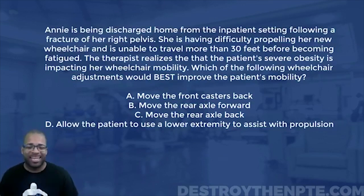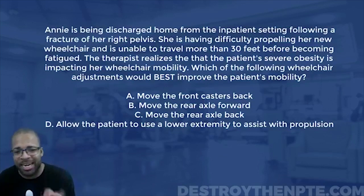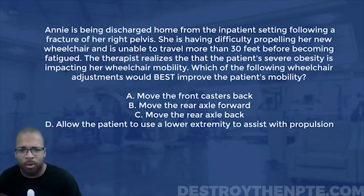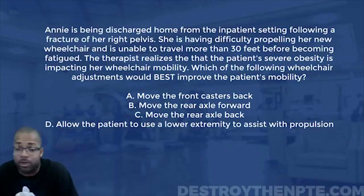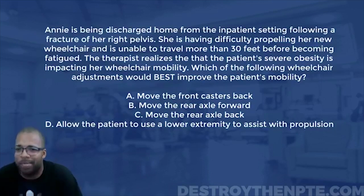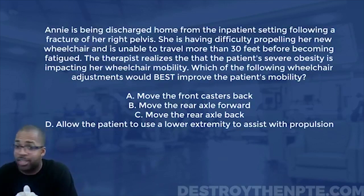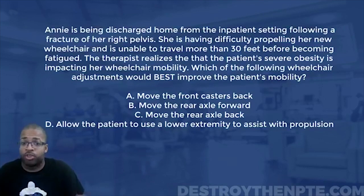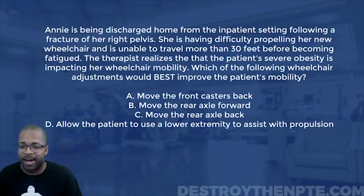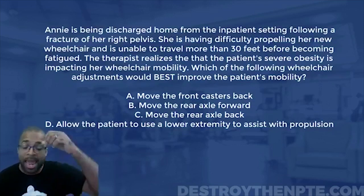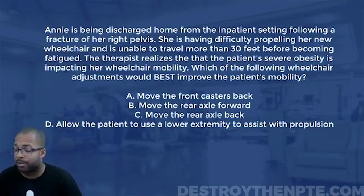As we look at these answer choices — a bunch of stuff moving back and forward — before we dissect them, we need to understand what it means that our patient is severely obese. This question is really asking what's the difference between a standard wheelchair and a bariatric wheelchair. Bariatric wheelchairs are for patients who weigh more than 250 pounds — they're typically wider, more sturdy, more durable, and they have different placements of the axle. That's what you need to know to get this question right.